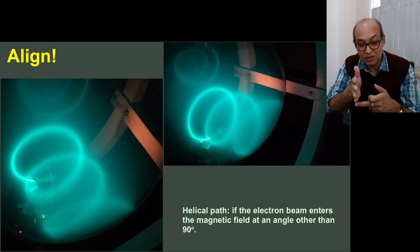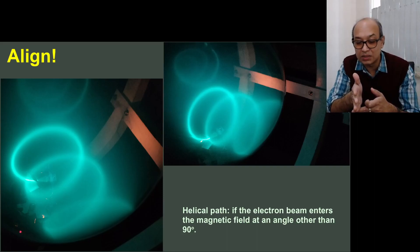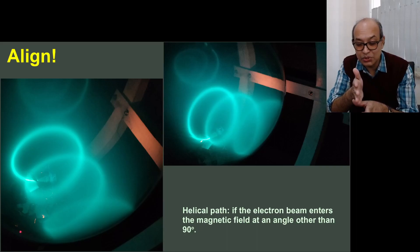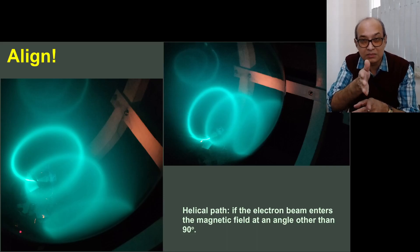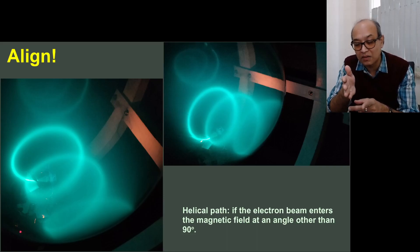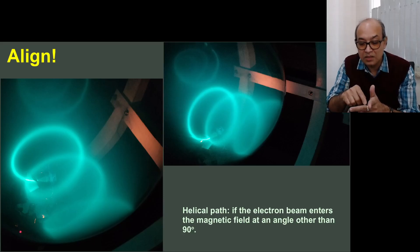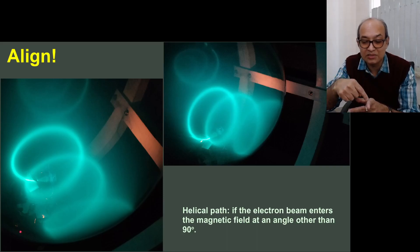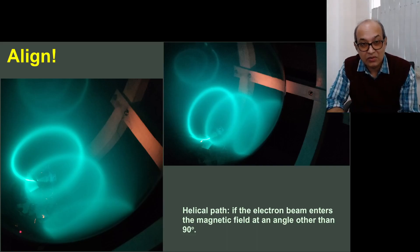But what if the electron beam is not coming out perpendicular to the magnetic field? Then, simple, you break the beam into two perpendicular segments. One is the component of the velocity along the magnetic field and component of the velocity perpendicular to it. The one perpendicular to it will give it a circular trajectory, but then this circle must be moving forward because of the parallel component of the velocity. So net result is we will have a helical trajectory, and you can see here.